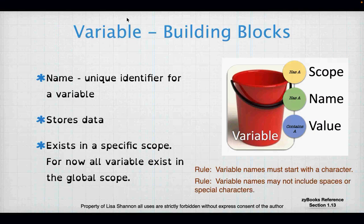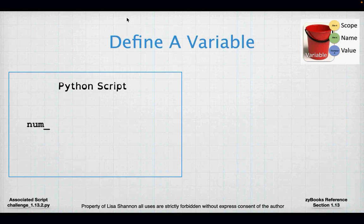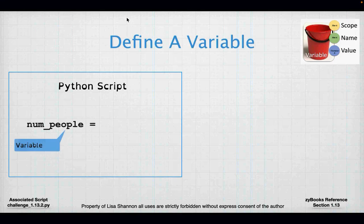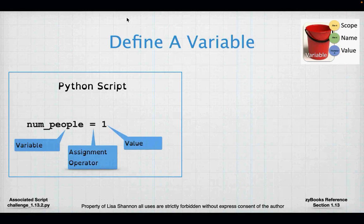Variable names must start with a character. Variable names may not include spaces or special characters — the only non-alphanumeric character allowed is an underscore. To define a variable: type the name on the left-hand side of a single equal sign, then the value on the right-hand side. For example, num_people is a variable name because it appears on the left-hand side of a single equal sign. That will always be the case in Python.